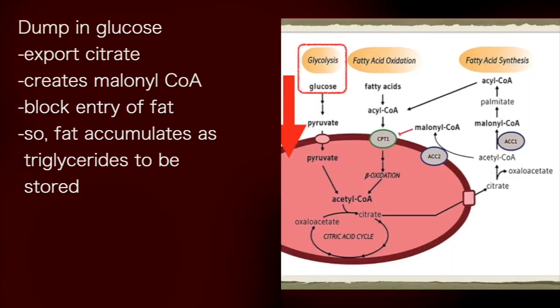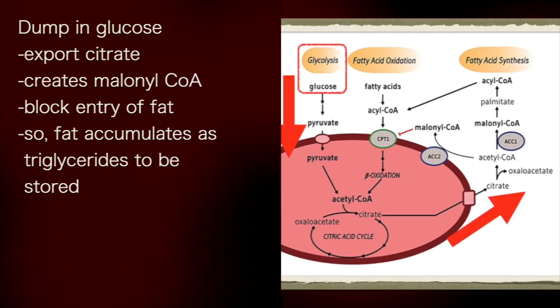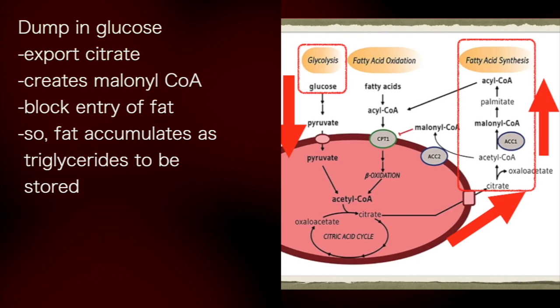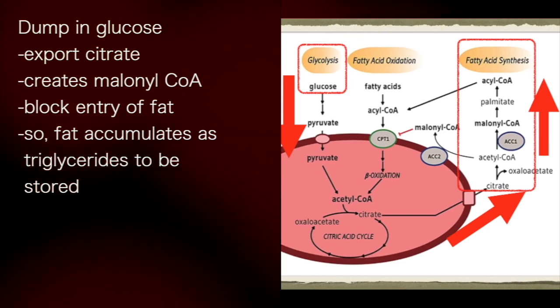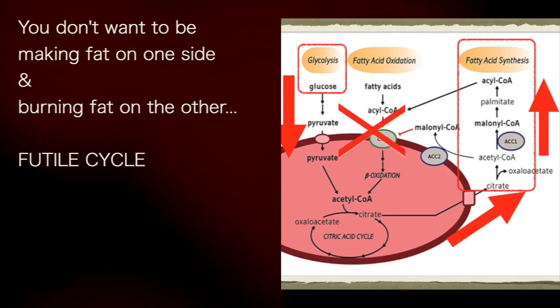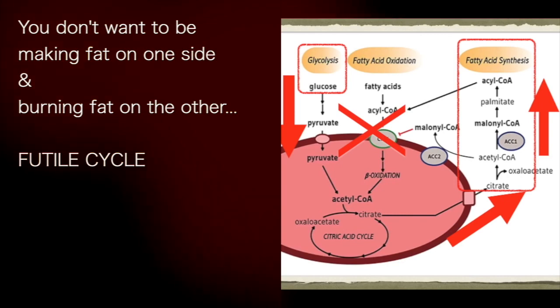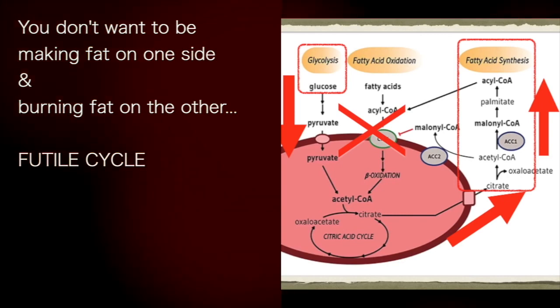So when you dump a bunch of glucose into your cell, your body knows it's going to make fat. Fatty acid synthesis. And malonyl-CoA, as the first committed step to fatty acid synthesis, blocks CPT-1. Because you don't want to be making fat on one side here on the right and then burning fat on the other side.